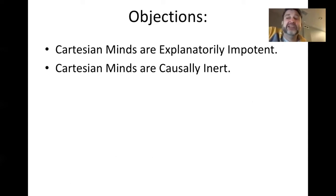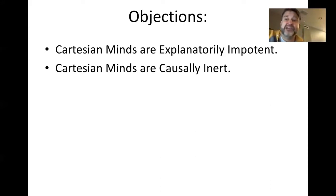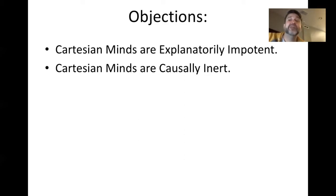Additionally, Cartesian minds may be causally inert — there's not a good explanation of how Cartesian minds can cause responses to occur in a body. A big component of Descartes' view is that minds are non-physical substances, but they causally interact with bodies. But that's an incredibly weird thing to explain. How could a non-physical thing push a physical thing around? Philosophers who have subscribed to this kind of dualistic view have never been able to offer a good explanation for how a non-physical mind could move physical matter.